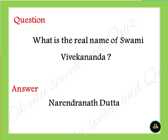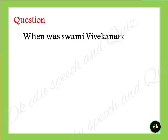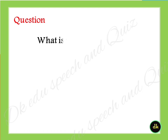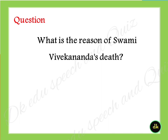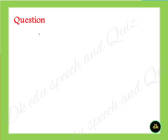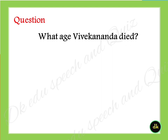When did Swami Vivekananda die? Answer: 4th July 1902. What is the reason for Swami Vivekananda's death? Answer: Rupture of blood vessels in the brain. What age did Vivekananda die? Answer: 39.